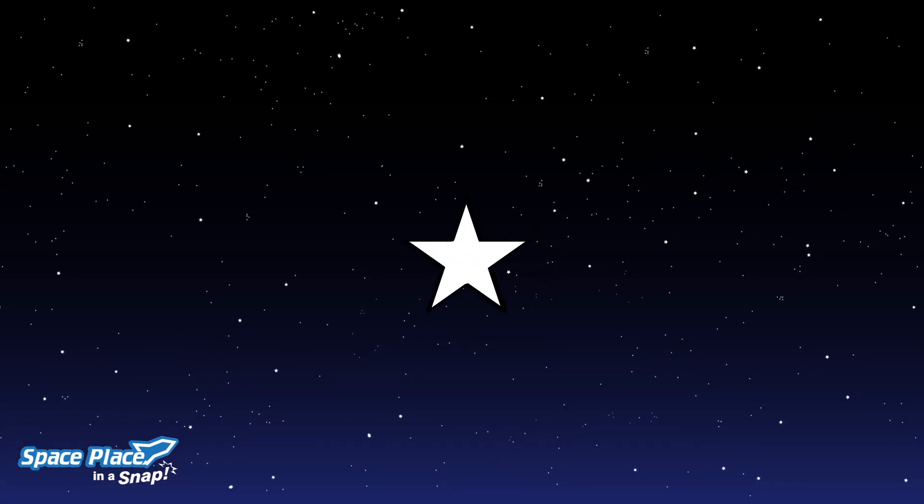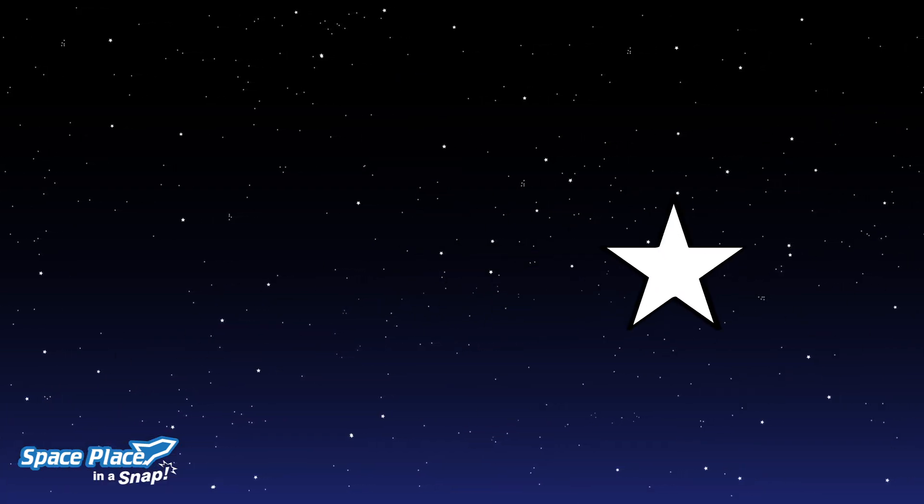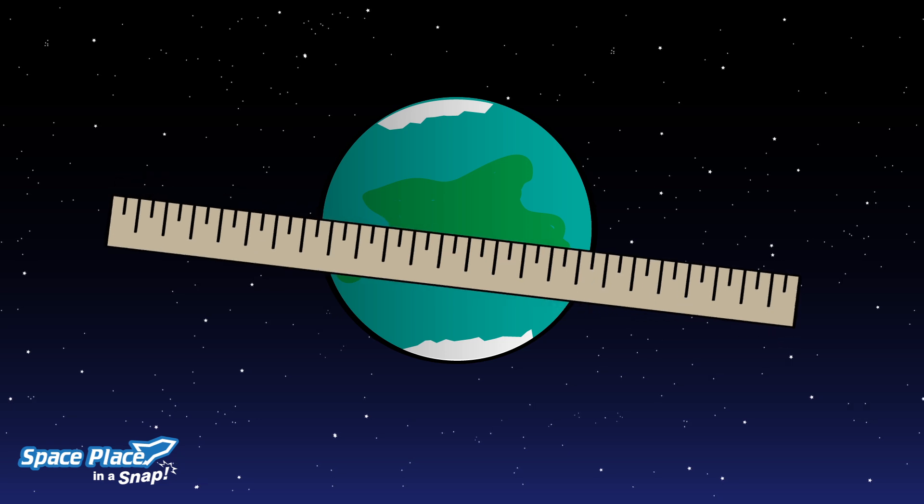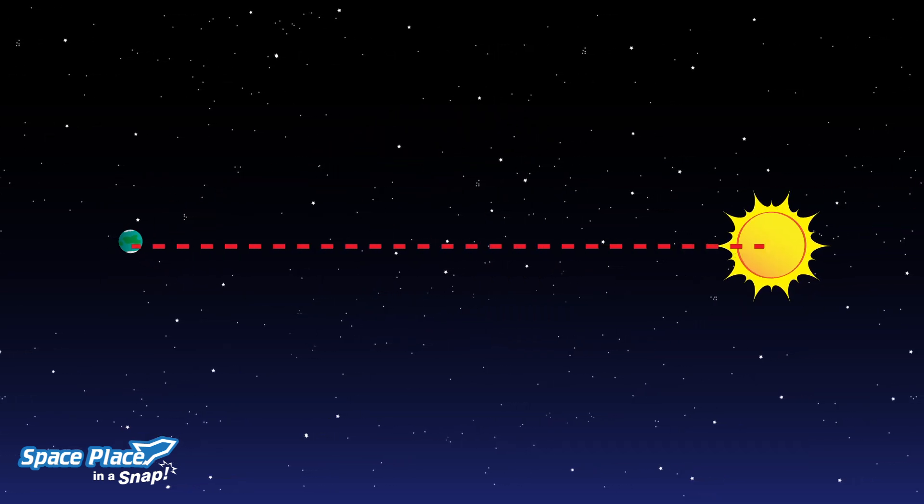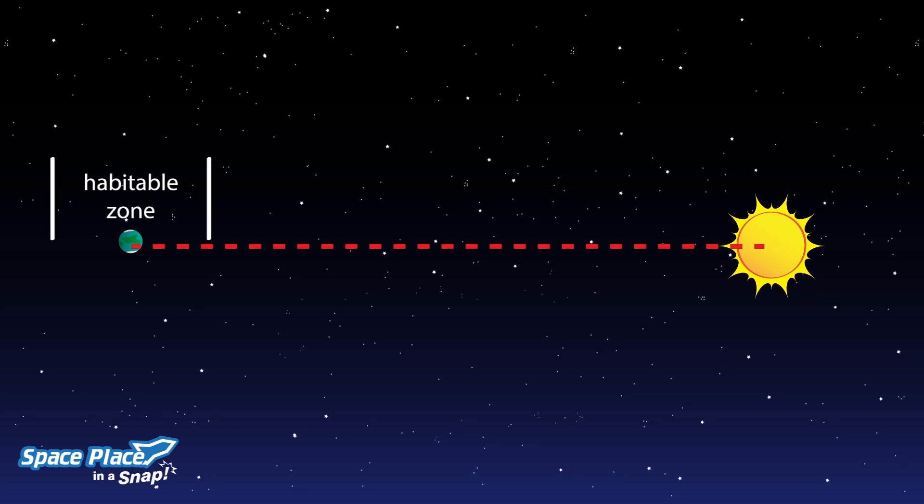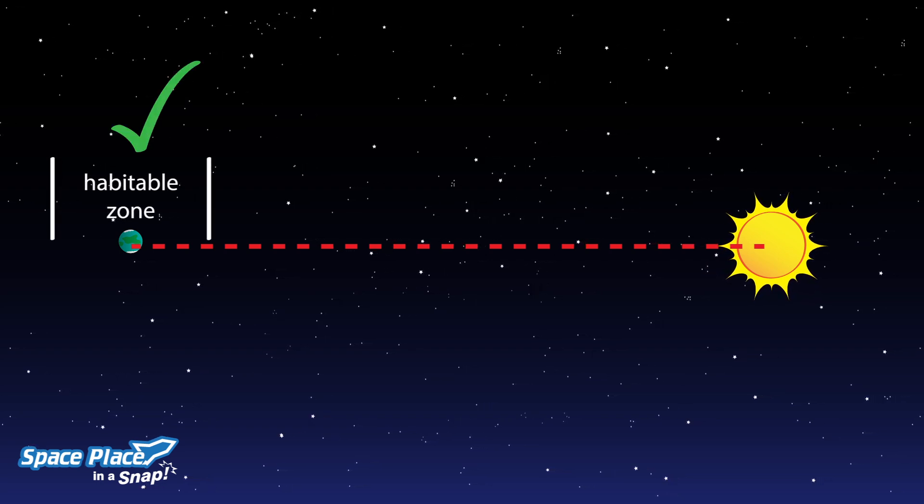They watch the starry skies for planets similar to Earth. Ones that are about the same size, that are just the right distance from their star. We call this distance the habitable zone. It's where the temperature of the planet would be similar to Earth.